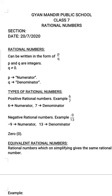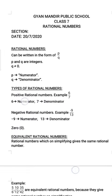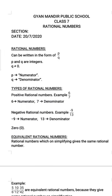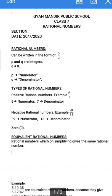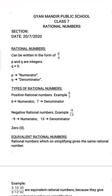Now we go to the definition of rational numbers. A rational number is one we can write in p by q form. The condition is that p and q should be integers — those numbers should not be in decimal points. For example, 7.6 upon 3 is also in p by q form but we will not call it a rational number. A rational number should be in the form p by q where p and q are integers, and q, the denominator, should not be 0. The number below is called the denominator and the number above is called the numerator.